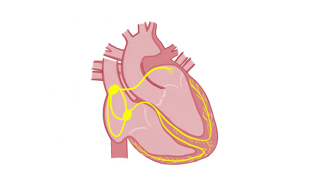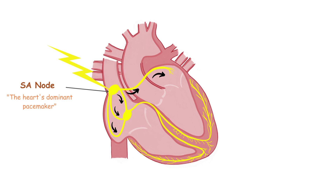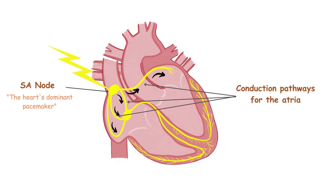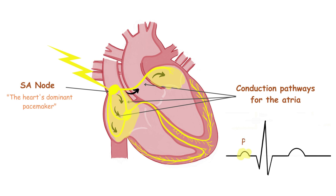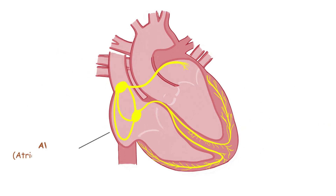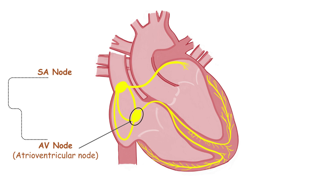Normally, the electrical activity of the heart originates in the SA node — this is the heart's dominant pacemaker. This stimulus, generated at the SA node, spreads away in all directions and travels down through the conduction pathways for the atria to reach all of the myocytes of the atria. This stimulus is going to depolarize the atria and will give a deflection on ECG named the P wave. The next stop is the AV node, the only normal conducting pathway between the atria and the ventricles.